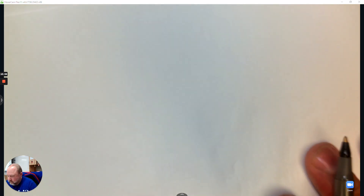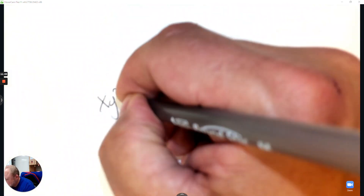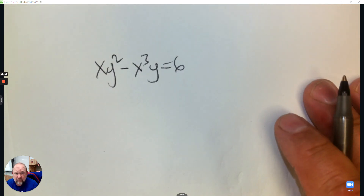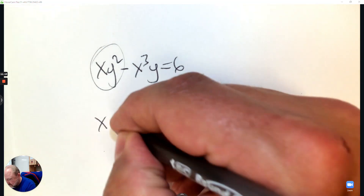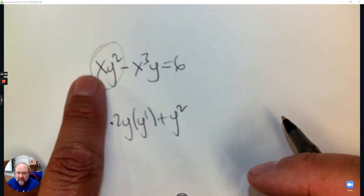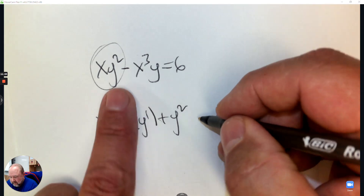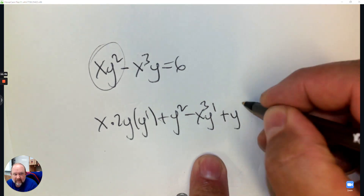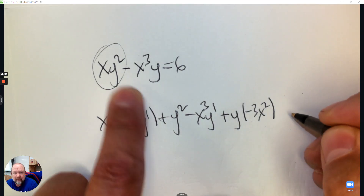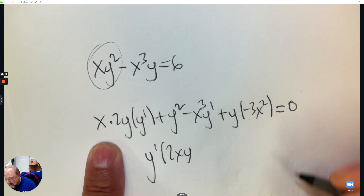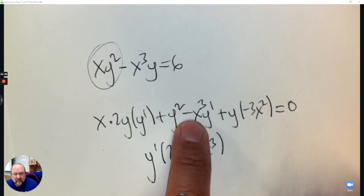Next question: you're given an equation and need to take the derivative implicitly. Show that the derivative equals what it says. So take the derivative implicitly — this is the product rule: first times the derivative of the second (which needs a y'), plus the second times the derivative of the first. Then do it again for the next term: first times derivative of second (needs a y'), plus second times derivative of first. The derivative of six is zero. Factor out y' from 2xy and negative x cubed.